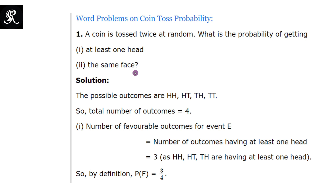In this kind of question, whenever we are asked about the probability of an experiment, first of all we need to know the sample space of that experiment. We know that in the experiment of tossing a coin twice, as we discussed in the previous video, the total number of possible outcomes would be 4: HH,